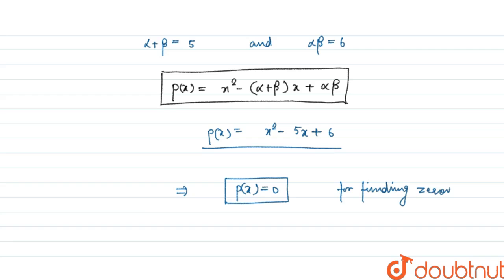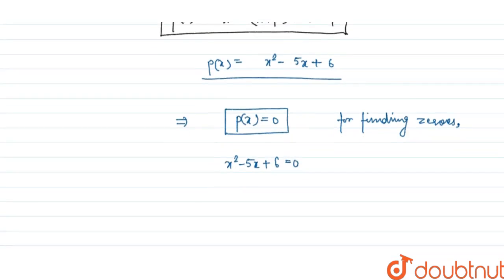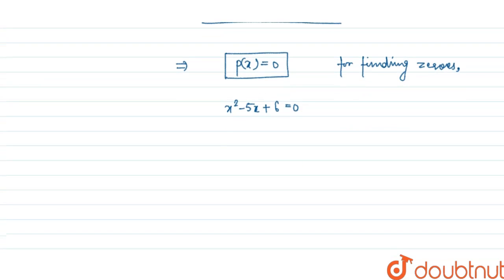Just write the equation, that is x square minus 5x plus 6 is equal to 0. So factorize this polynomial. x square minus 3x minus 2x plus 6 is equal to 0. Taking x as common, x(x minus 3) minus 2(x minus 3) is equal to 0. So (x minus 3) and (x minus 2) are two factors of this quadratic polynomial.